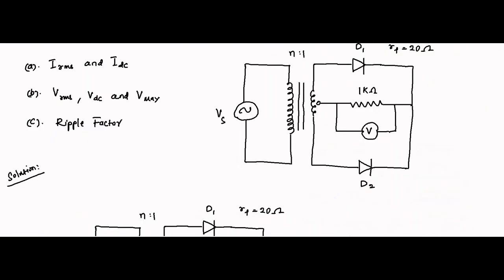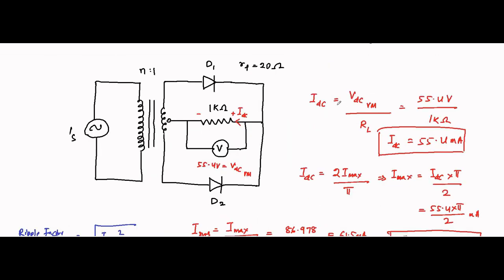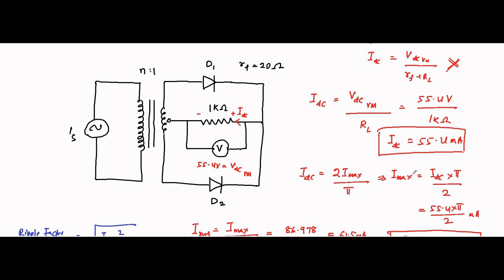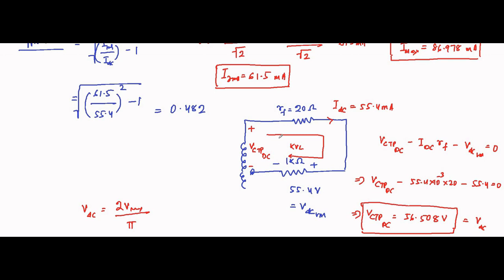Here is a common mistake students make: to determine I_DC, some use V_DC divided by (r_f plus R_L). That is wrong. The voltmeter is connected only across the 1 kilo ohm load resistor, and the reading is 55.4 volts, so we take only the load resistor into consideration. The correct formula is I_DC equals V_DC (voltmeter reading) divided by the load resistance R_L only — that gives the DC current through it.